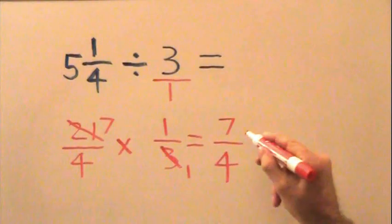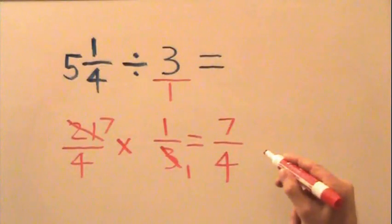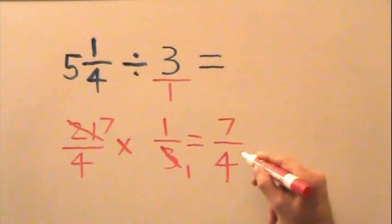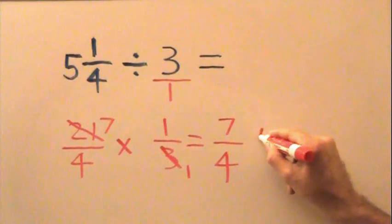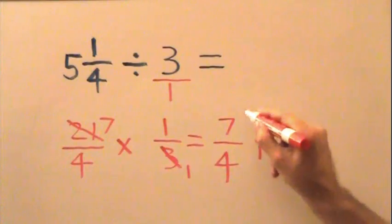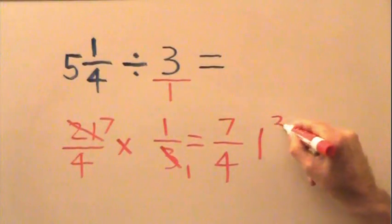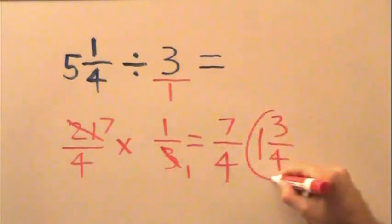We do this by asking ourselves how many times does 4 go into 7 without going over. The answer is once, because 4 times 1 is 4, and it's still less than 7. So we put down our whole number of 1. There are 3 left over from 4 to 7. So our final answer is 1 and 3 fourths.